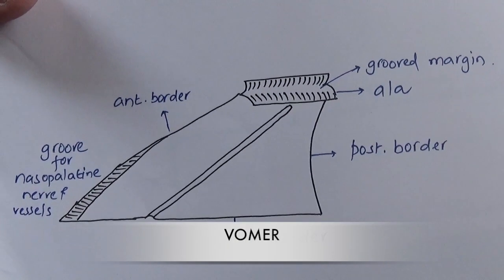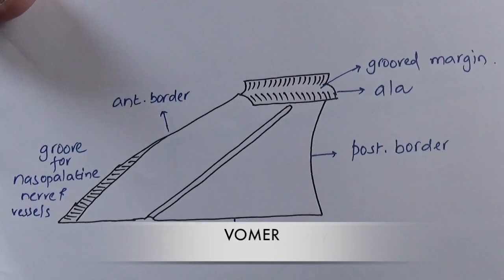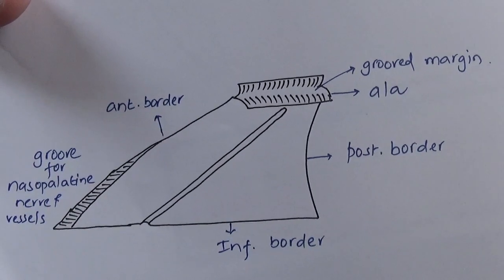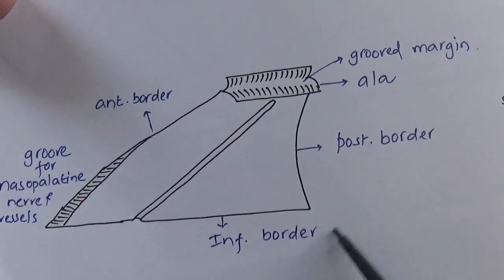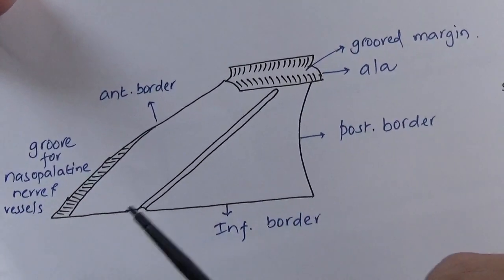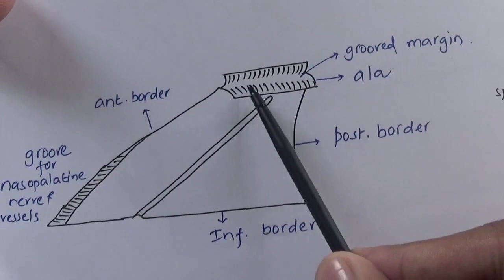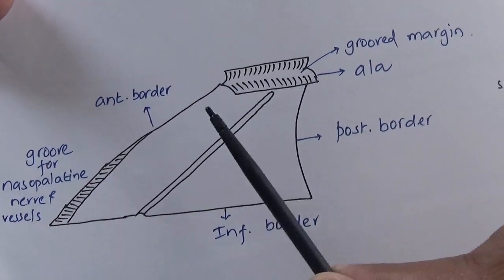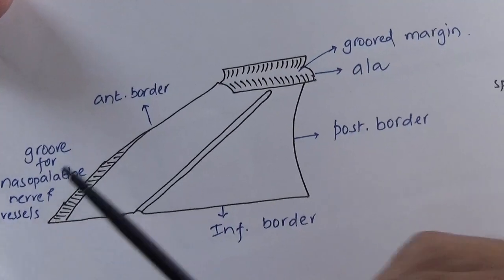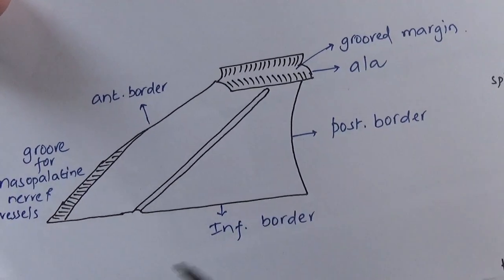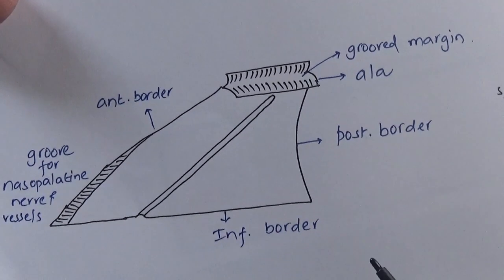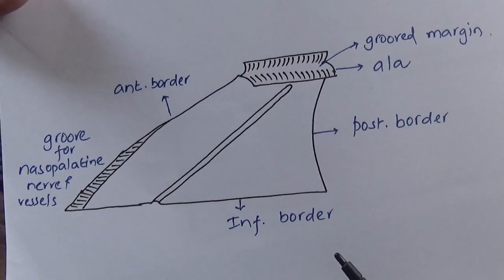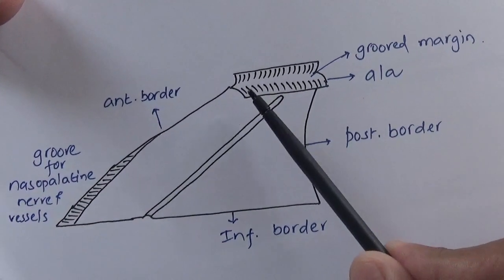Hello everyone, let's learn today the anatomy of the Vomer bone. In this diagram you can see the Vomer. It has four borders and it is a thin, unpaired bone forming the skeleton of the splanchnocranium.